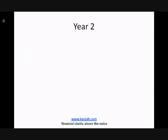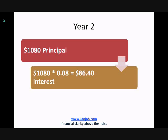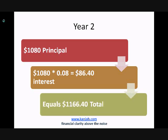Let's now move on to year two. In year two, we start with $1,080 in principal. Here's where it gets interesting: we multiply that $1,080 in principal times our 8% interest rate, and we get $86.40 in interest. So notice that we got more interest in year two than we did in year one. This is the power of compounding — that you earn more interest every single year because you have more invested. You add these two numbers together, and you get $1,080 plus $86.40, which is $1,166.40 total at the end of year two.